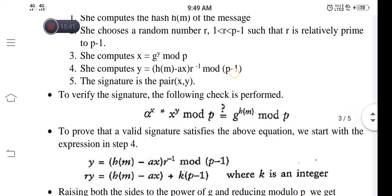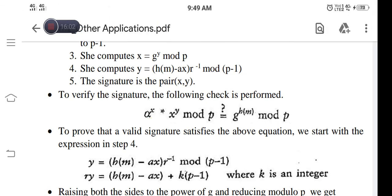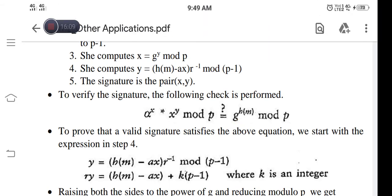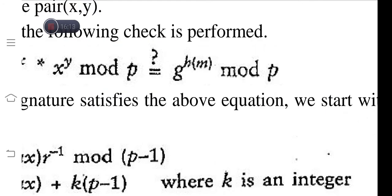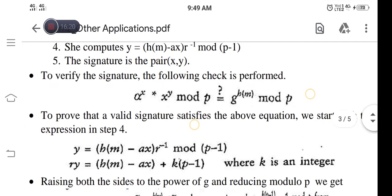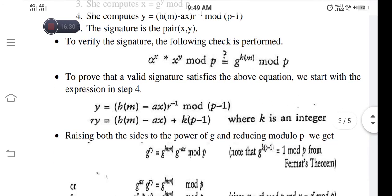Now to verify the signature, the following check is performed, since the values have to be cross-verified. The calculation done to verify is: check whether α^x × x^y mod p equals g^(h(m)) mod p. This equation is computed and compared to determine whether the signature is valid.